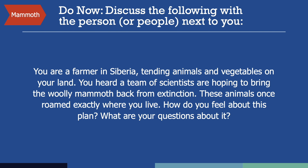As an introduction to the third case study, please consider the following scenario. Imagine you are a farmer in Siberia, tending animals and vegetables on your land. You heard that a team of scientists are hoping to bring the woolly mammoth back from extinction — these animals once roamed exactly where you live. How do you feel about this plan, and what are your questions about it? You may want to pause here to think about your own answers to these questions. Responses typically range from excitement about a woolly mammoth coming to life, to skepticism about the intent of the project, and concern that indigenous people living in areas where woolly mammoths used to roam — such as Siberia, Alaska, Canada, and Greenland — are not part of the decision-making process and stand to lose more of their land.